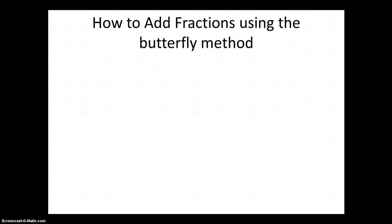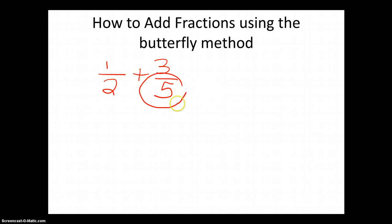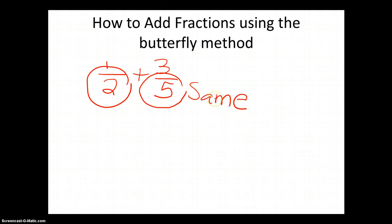How to add fractions using the butterfly method. Now, as you know, when you add fractions such as one-half plus three-fifths, I have to get a common denominator. I cannot add fractions without having my denominator — these are the numbers on the bottom, and they have to be the same. How do I get them to be the same? That's the tricky part.